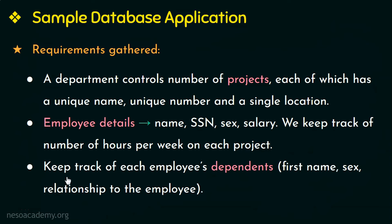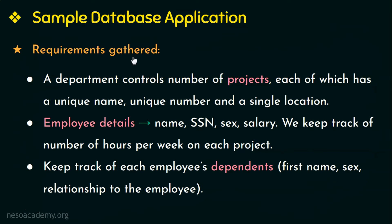We also keep track of each employee's dependents. An employee's dependents could be their spouse, parents, children, or anyone dependent on that employee. We need each dependent's first name, sex, and relationship to the employee. These are the requirements gathered for the company database.